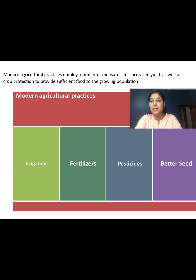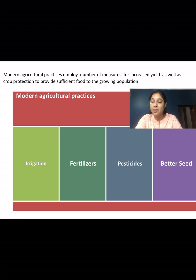These pesticides were extensively used in agriculture. The agriculture industry was also developing in those times with the Green Revolution, which aimed at protection of crops and higher yield to support the growing population. Agriculture developed through irrigation, better disease-resistant seeds, fertilizers, and pesticides to protect from field pests and stored pests.